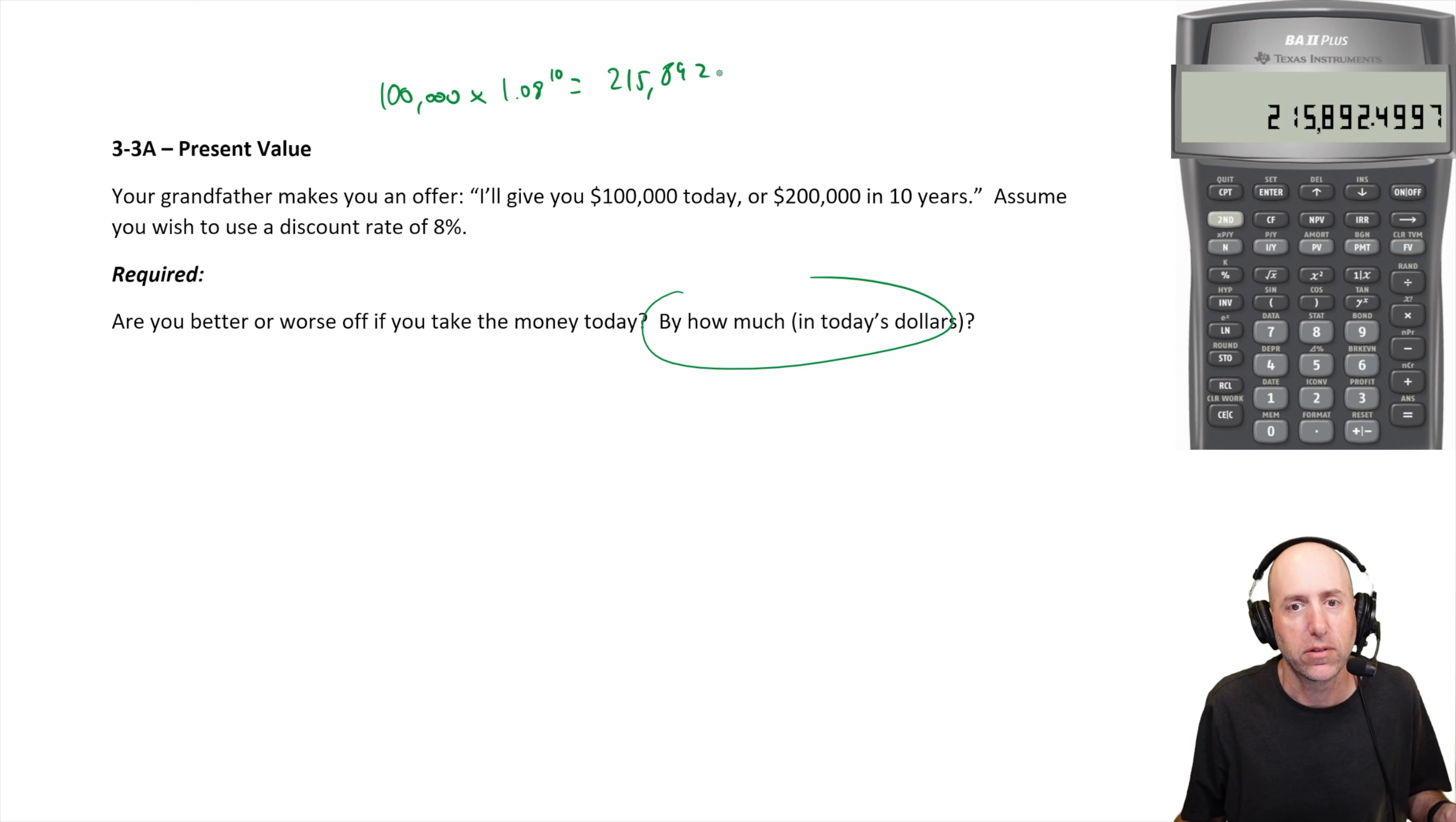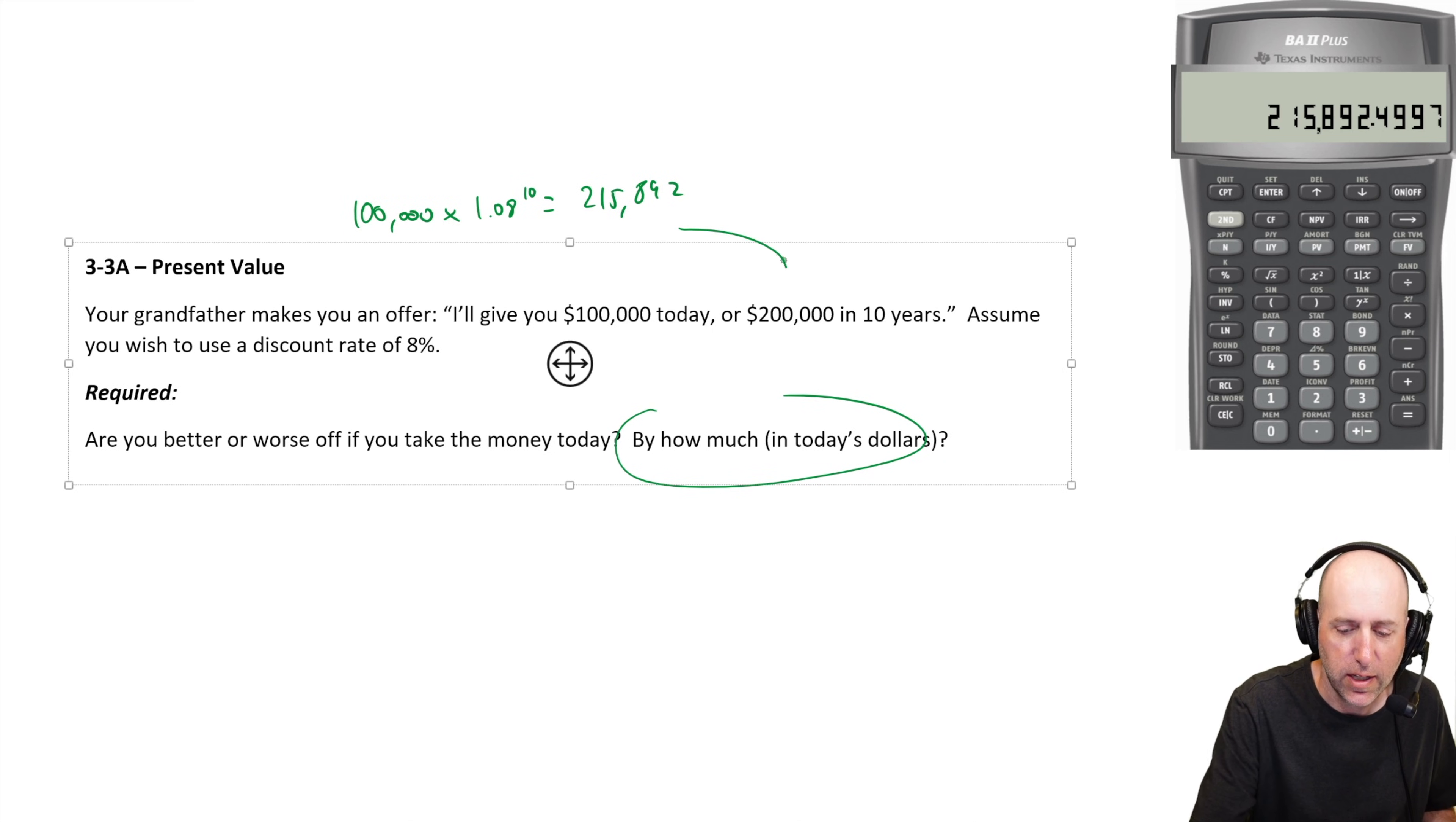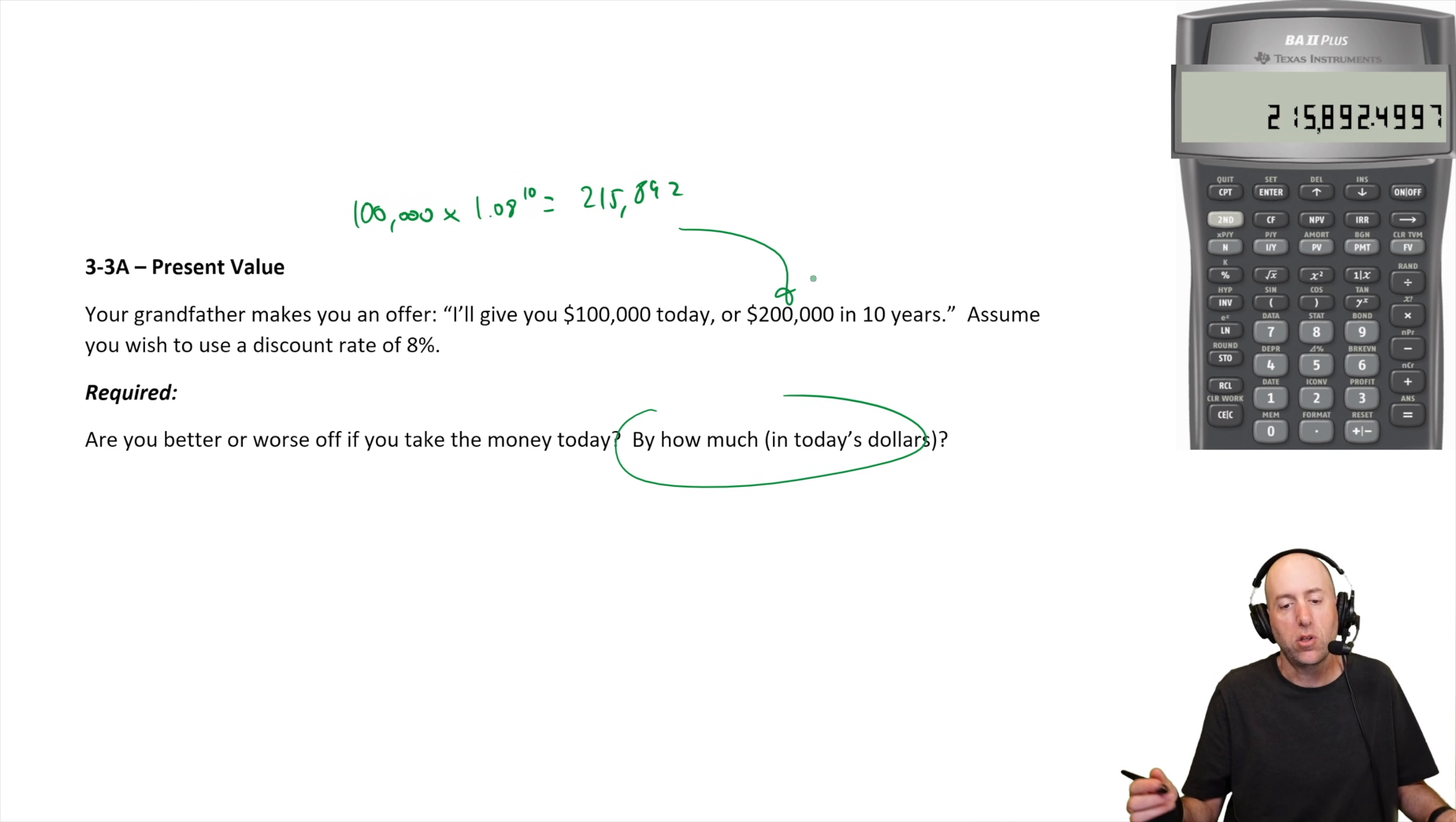I should take the $100,000 today, right? $100,000 today in 10 years is worth $215,892. I'm clearly better off to take the 100 grand today than to take 200 grand in 10 years.